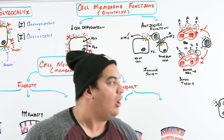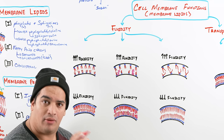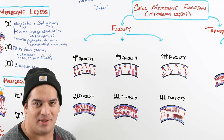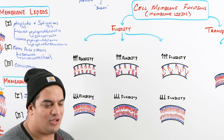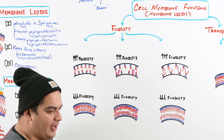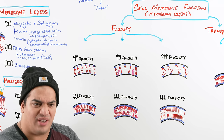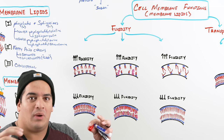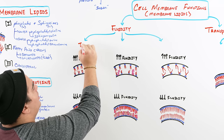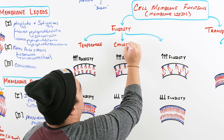Now let's talk about the membrane lipids and their functions. The first is fluidity — the ability of the cell to adapt its shape and movement. There are three important factors that influence fluidity: temperature, the presence of cholesterol, and the types of fatty acids. Fluidity can either be increased, meaning more space between phospholipids and more movement, or decreased, meaning the membrane becomes rigid and tight.